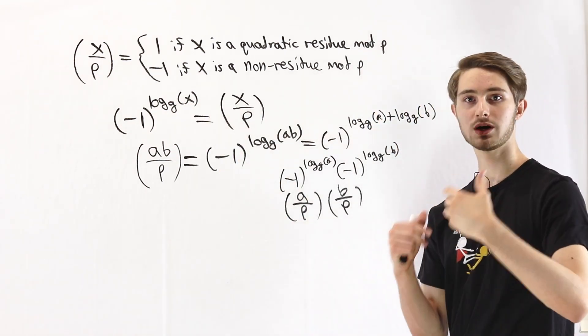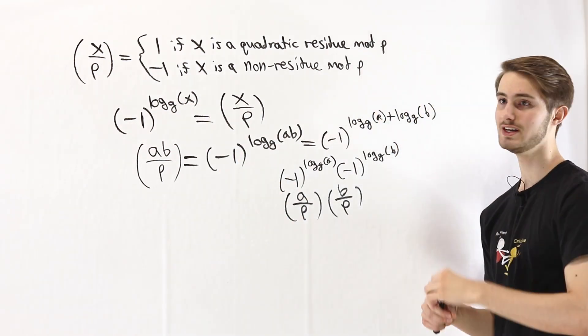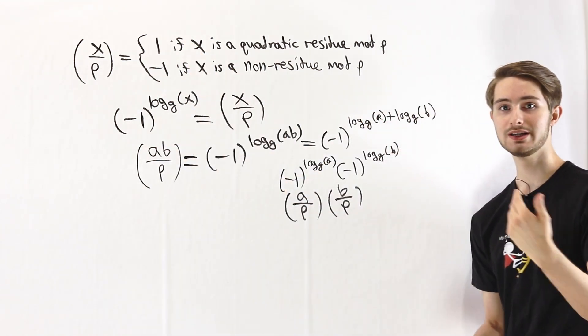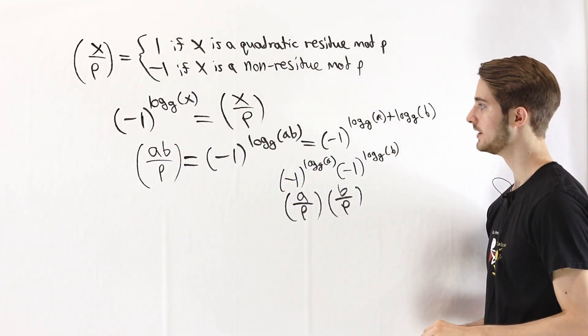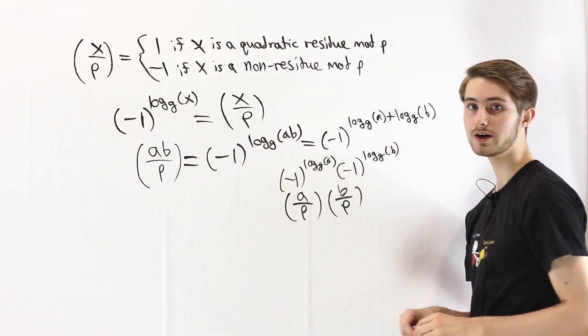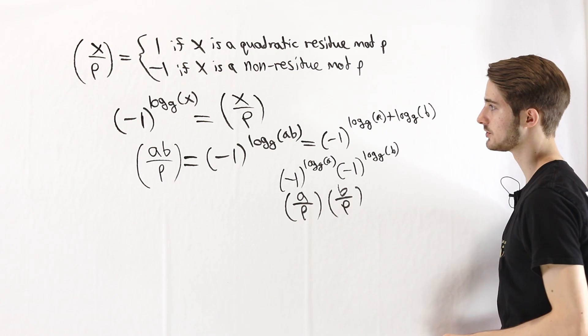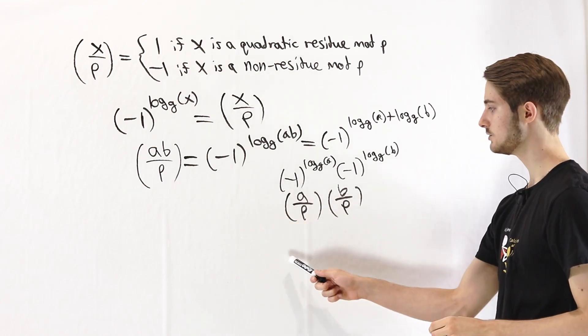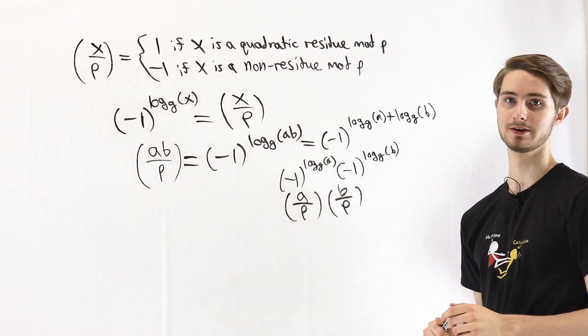And that's because quadratic residues always have an even index, which means we get 1, since (-1) to an even power will give us 1. By using that fact and the fact that we can split up the index of a product, we're able to get to our final result: that (ab/p) equals (a/p) times (b/p).